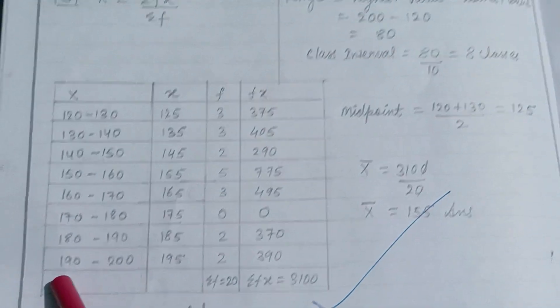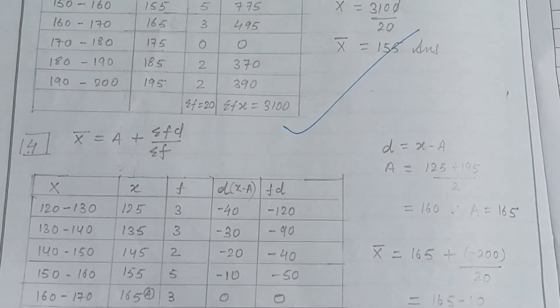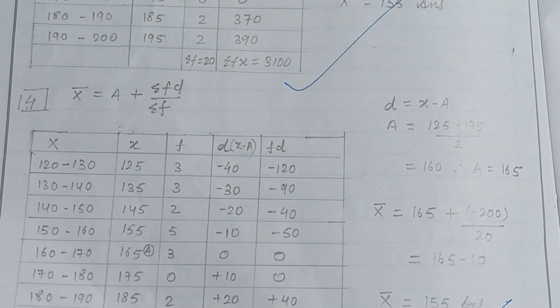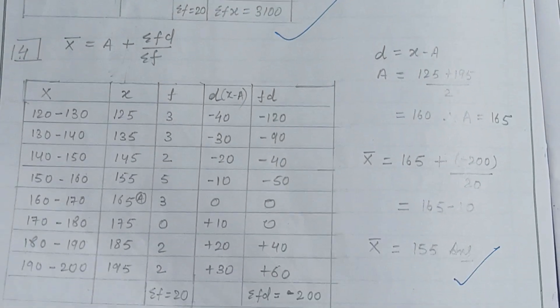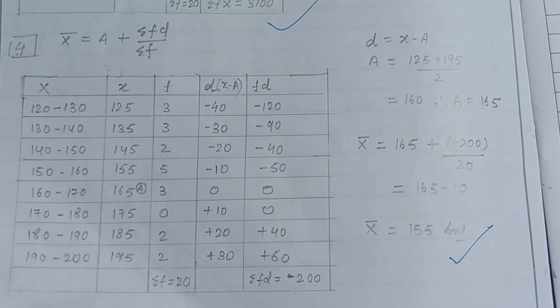Midpoint equals 120 plus 130 divided by 2 equals 125. The fourth formula is X bar equals A plus Sigma FD divided by Sigma F. Different columns are formed and by applying the formula we can calculate.